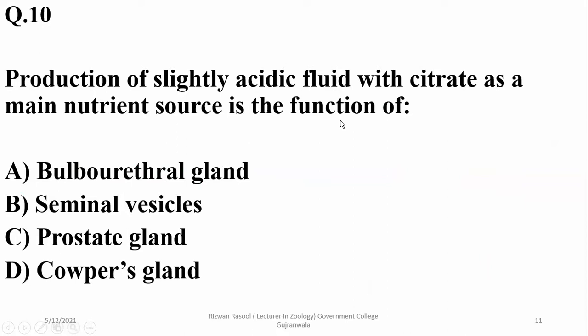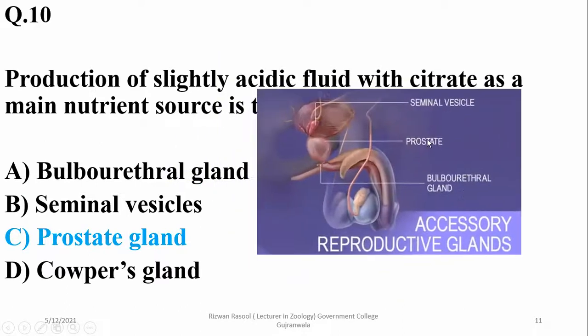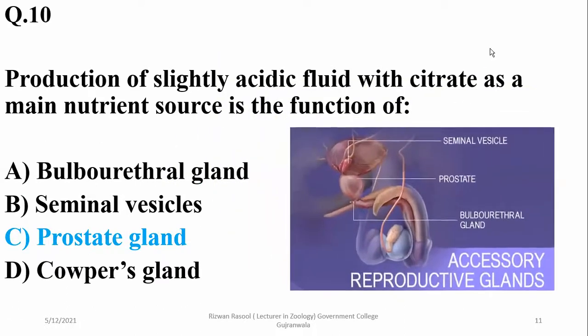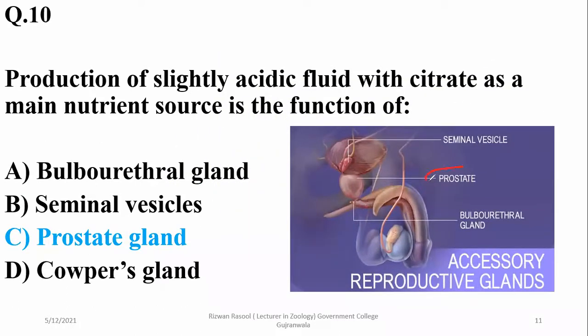Question number ten: production of slightly acidic fluid which serves as the main nutrient source is a function of the prostate gland. The prostate gland is the unpaired and largest exocrine gland related to the male reproductive system.